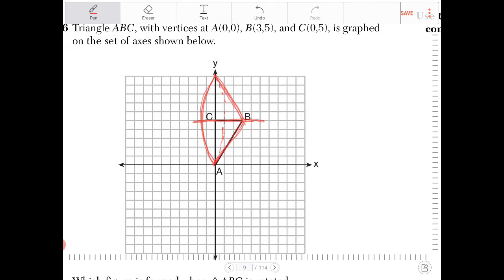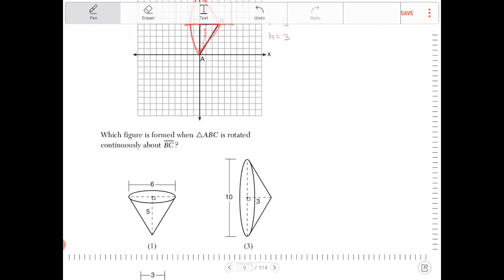So the radius of the cone is going to be the height of triangle ABC, which is 5. And the altitude of the cone, which I'm going to call H, is 3. So we're looking for something to that effect.